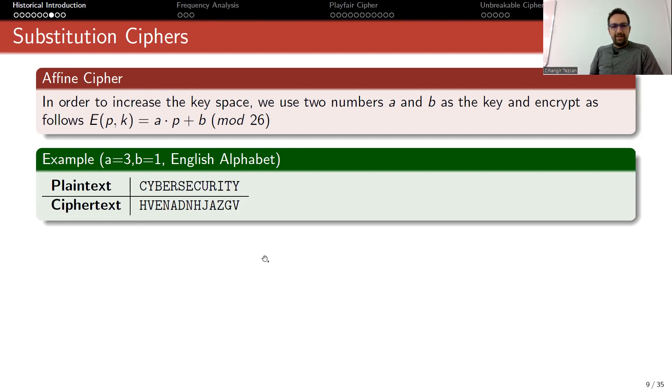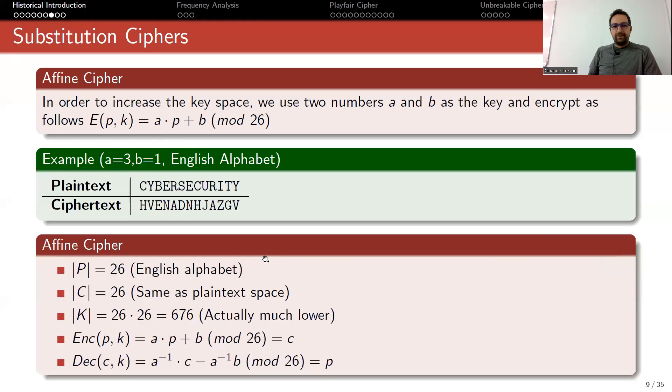This way you increase the key space. One might say I can choose a from 26 values, b also from 26 values, so we have a lot of options. But in reality you don't have the choice of 676 secret keys.